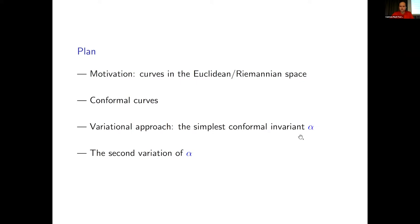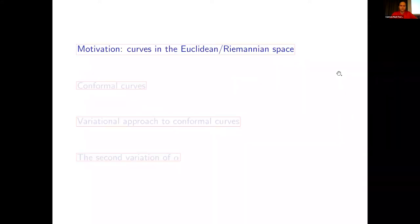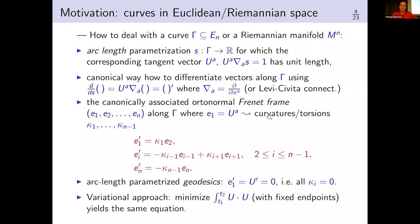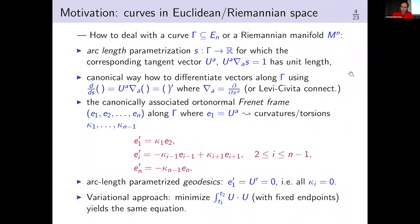This functional, which I denote by alpha, is essentially what was talked about in the previous talk. So it will be the variational approach, and the last step is to look at the second variation of this functional. These are the Frenet formulas in the Euclidean case — this is an introduction of what motivates us: what we know in the Euclidean case and what we would like to have in the conformal case.